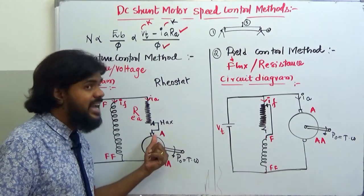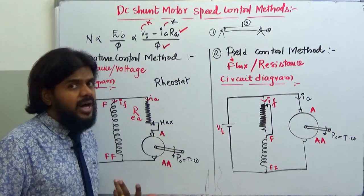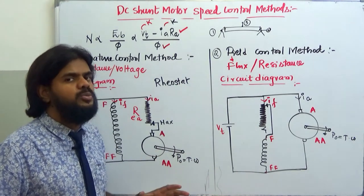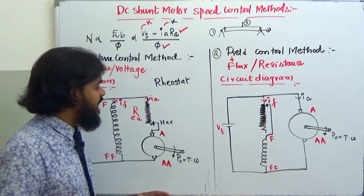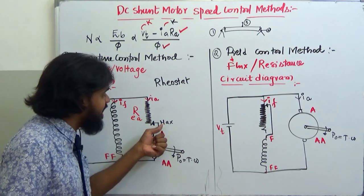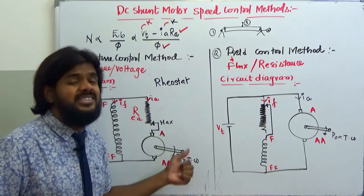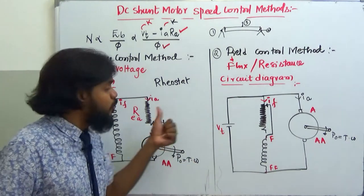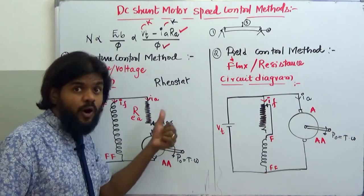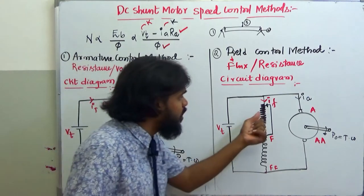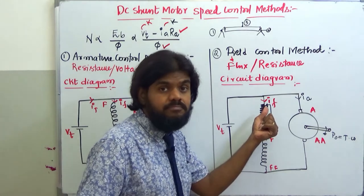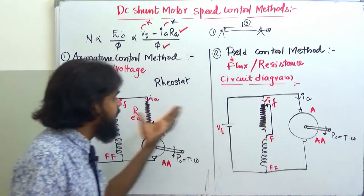When you do the experiment, your teacher will explain how the connections should be made. The armature rheostat is kept at its maximum resistance point initially, while the field rheostat is kept at its minimum resistance point.